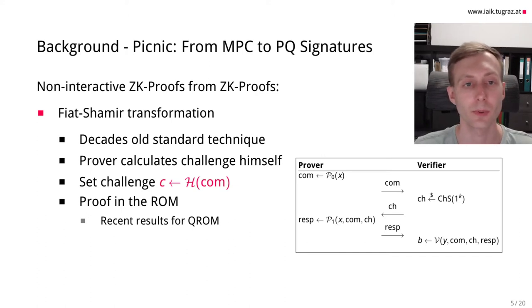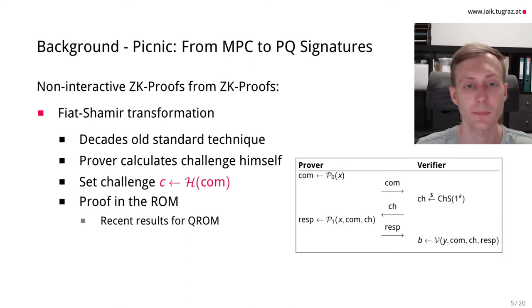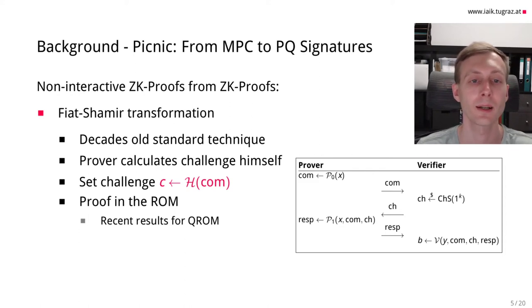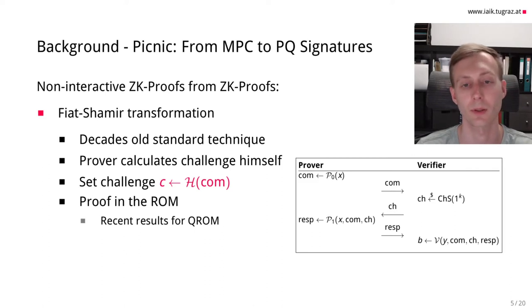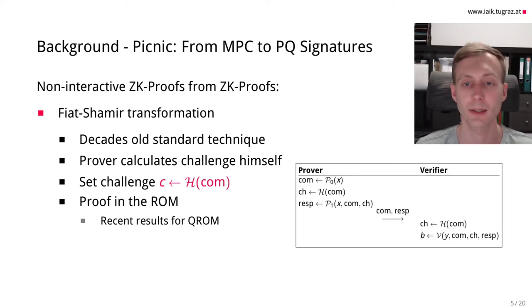From this interactive zero-knowledge proof, we can build a non-interactive variant using the Fiat-Shamir transformation, which is a decades-old standard technique. Instead of getting the challenge from the verifier, the prover computes the challenge himself. Since the challenge needs to be random and unpredictable, the prover sets it to the output of a random oracle applied to his first message. This transformation is proven in the random oracle model, with some recent results also for the quantum random oracle model, and results in a single-message protocol.